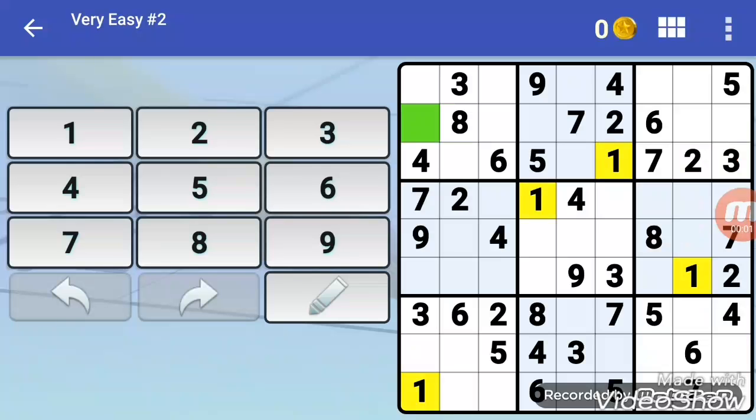Step 4. Use cross-hatching, the process of figuring out where a number fits by eliminating possibilities based on numbers in other squares in the same rows, columns and boxes.